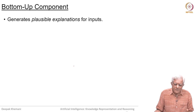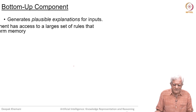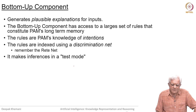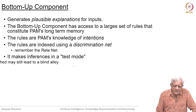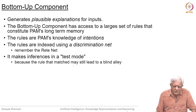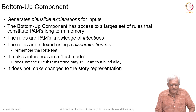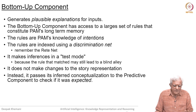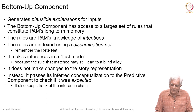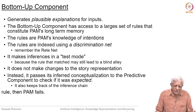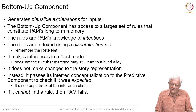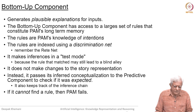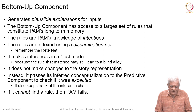The bottom-up component generates plausible explanations of inputs. It uses PAM's knowledge of intentions and the rules are indexed in a discrimination net of the kind we saw in the rated network. It makes inferences in a test mode because the rule that matched may still lead to a blind alley. It does not make changes to the story representation; instead, as it makes an inference, it passes it back to the predictive component which tries to see whether a prediction was matched. If it cannot find a rule, then PAM has no way of understanding the story.